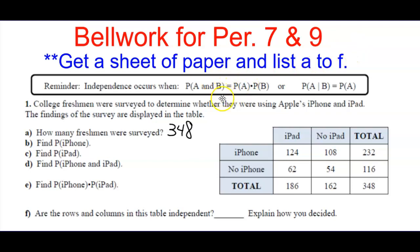Independence occurs when the intersection of two events is the same as if you multiply them together. So if you say that event A given event B, you end up with just event A — meaning that B has no effect on A.